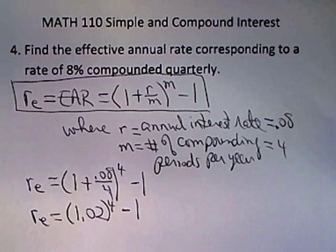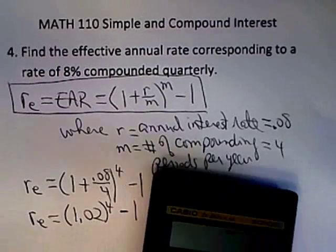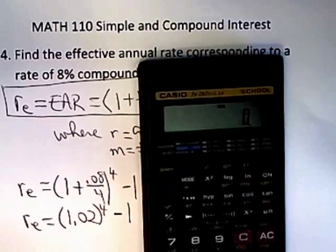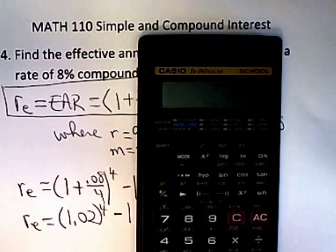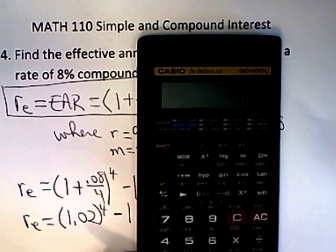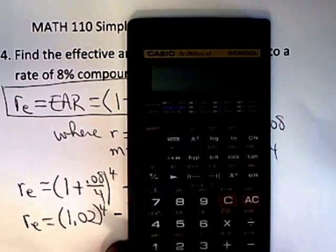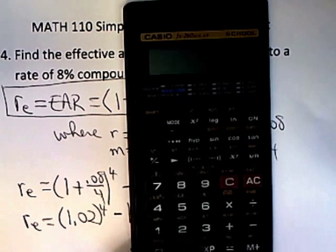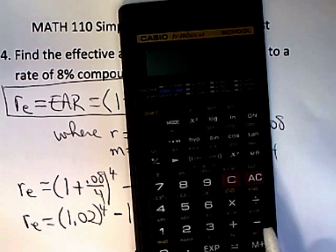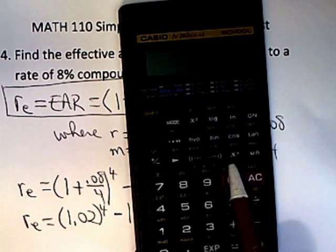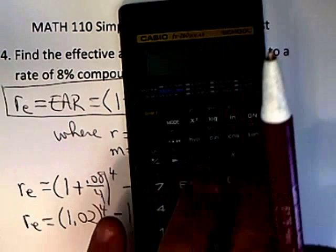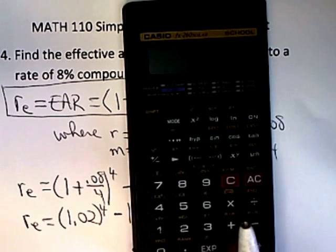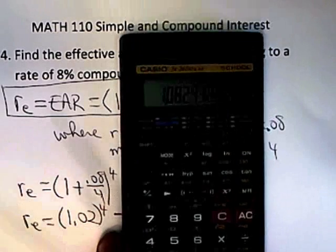Now, I don't suspect anybody's going to have any trouble doing this on the calculator, but since I have mine here, I'll just do it. I'm using this Casio FX260, and basically all you do is type in the base, which is 1.02. You hit the power button, which is the X to the Y button, and then you do 4, because the power is 4, and you press equal.